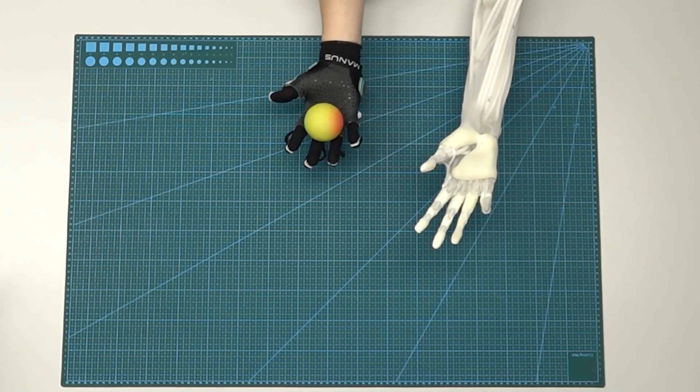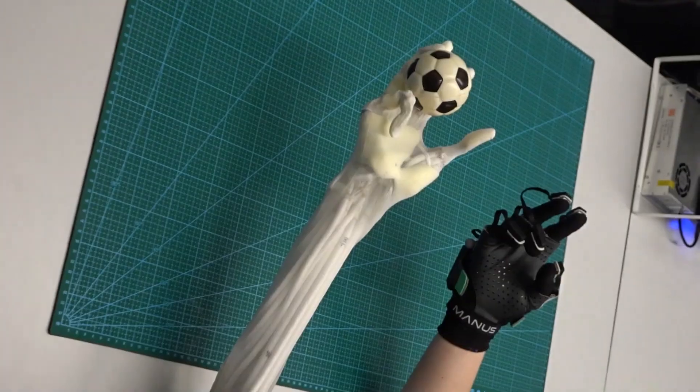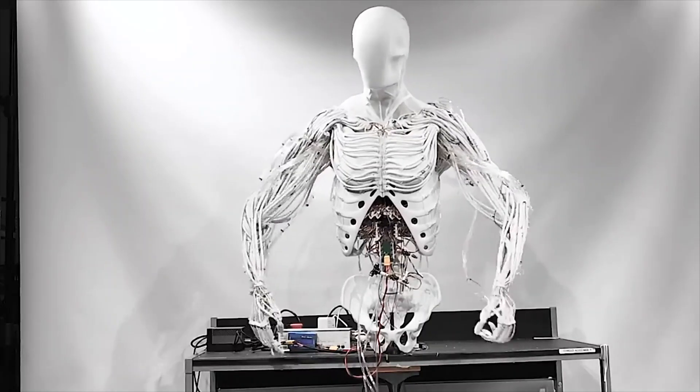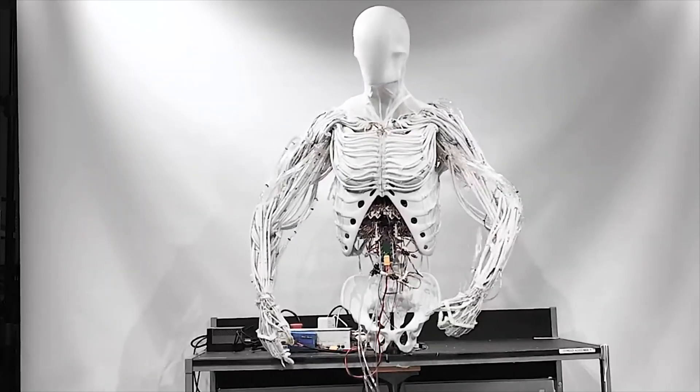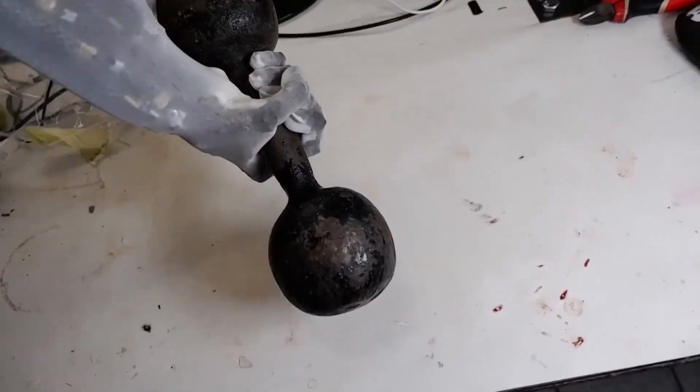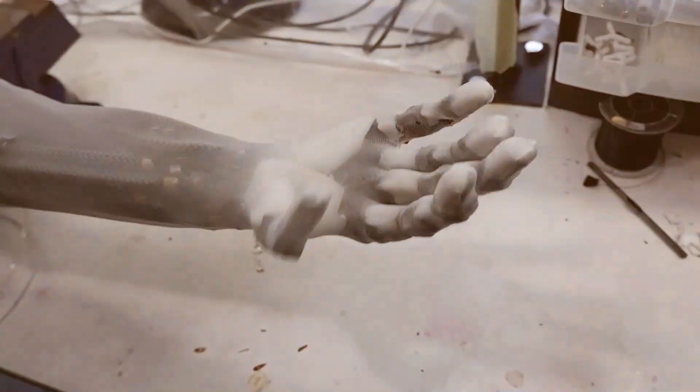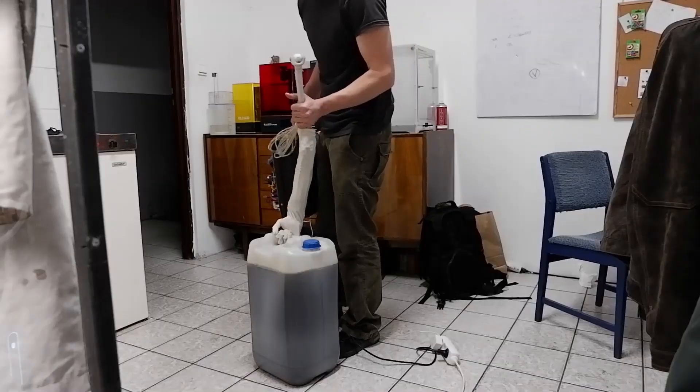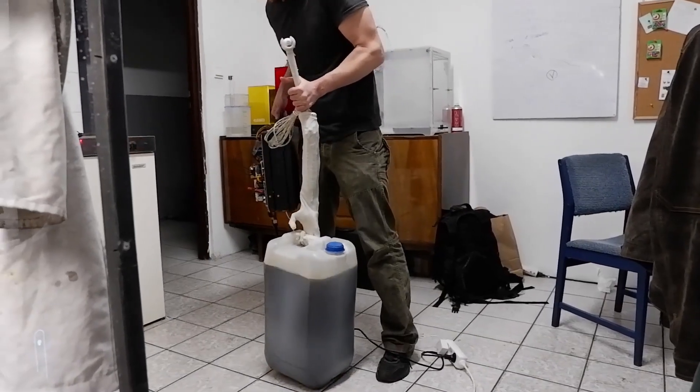Let's talk power. In demonstration videos, this system has shown impressive strength. The robotic arm alone can lift a seven kilogram, or 15.6 pound, dumbbell—and that's with only half the artificial muscles that a human body would have. The Clone hand, powered by their proprietary artificial muscles, is reportedly 10 times stronger than most robotic hands available today.